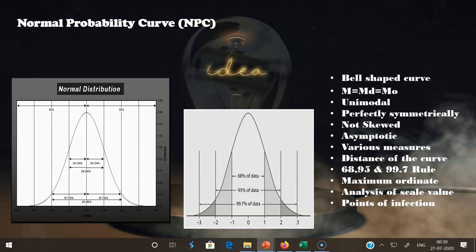Fifth, the normal curve is not skewed — the skewness value equals zero. Sixth, it is asymptotic — the curve does not touch the x-axis on either side, extending from negative infinity to positive infinity. Key measures of the normal probability curve: QD ≈ 0.6745, mean deviation ≈ 0.7979, skewness = 0, and kurtosis = 0.263.